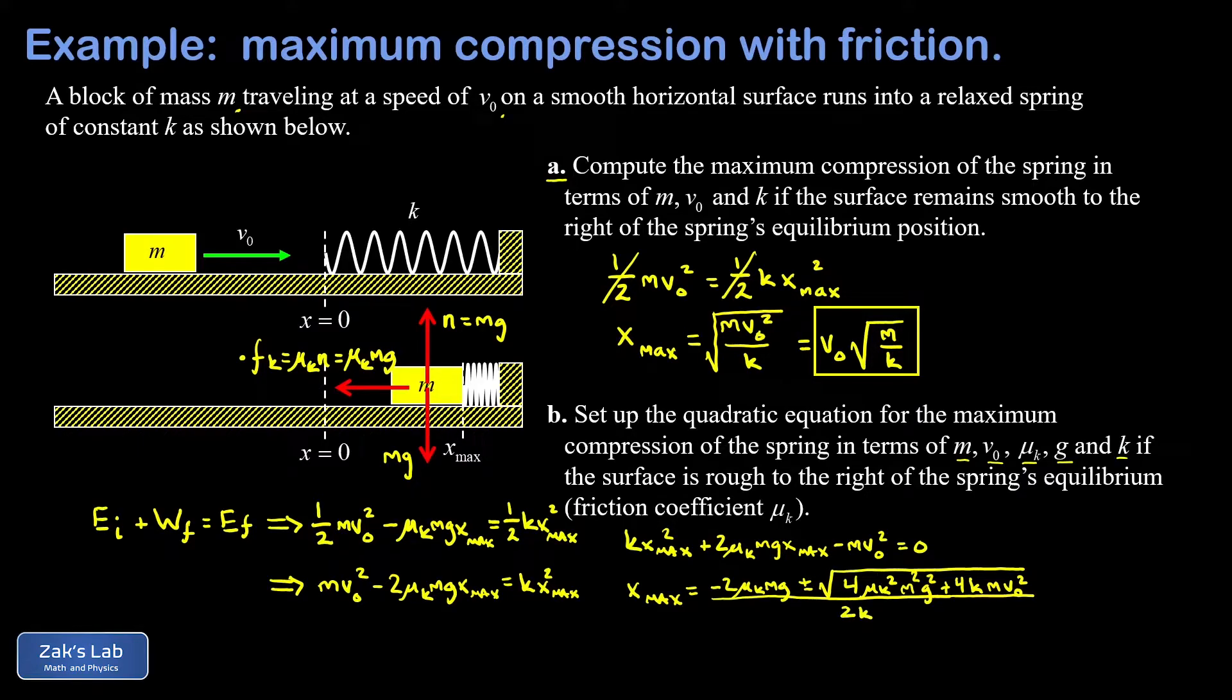So we're really done with the problem. But we could probably clean it up a little better. First, I noticed that I need to keep the positive term here. And the reason why is if I kept the negative term, that would be a negative value of x max, meaning that the block ended to the left of the equilibrium position. Well, that's not happening.